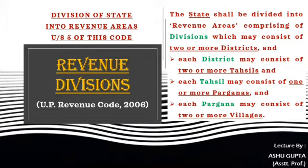Under Section 5 of the UP Revenue Code 2006, titled 'Division of State into Revenue Areas,' the state shall be divided into revenue areas comprising of divisions, which may consist of two or more districts. Revenue areas created in each district may consist of two or more villages. This means there are four types of divisions: district, tahsil, pargana, and village.